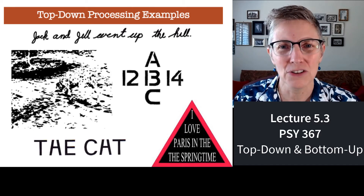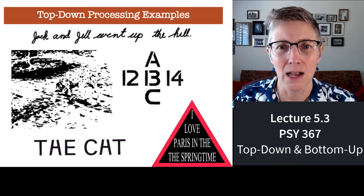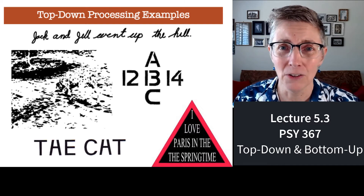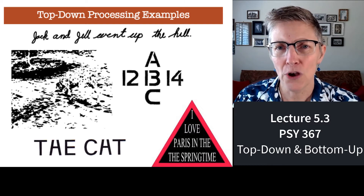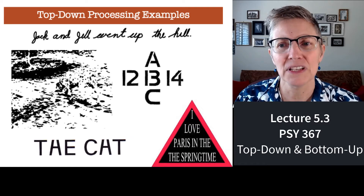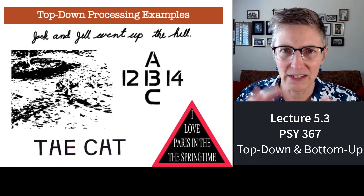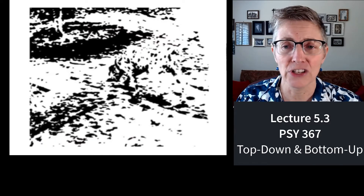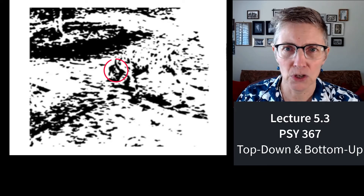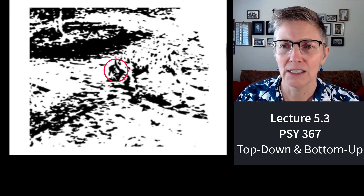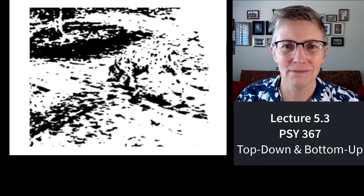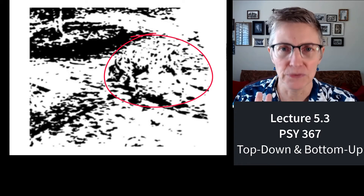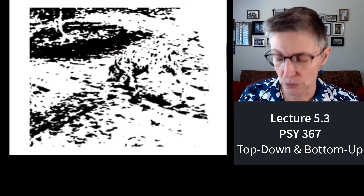There's one last figure on here. It looks like a bunch of blobs. If you've never seen it before, it's going to look like a bunch of blobs for a while. But if you know that it's actually a Dalmatian — a white dog with black spots — the full body of the Dalmatian is in there. His head is down below; he's eating something off the ground. Once you see the Dalmatian, you won't be able to unsee it. You'll have the knowledge.